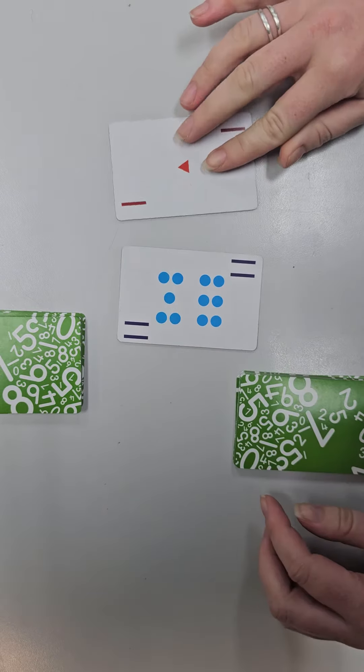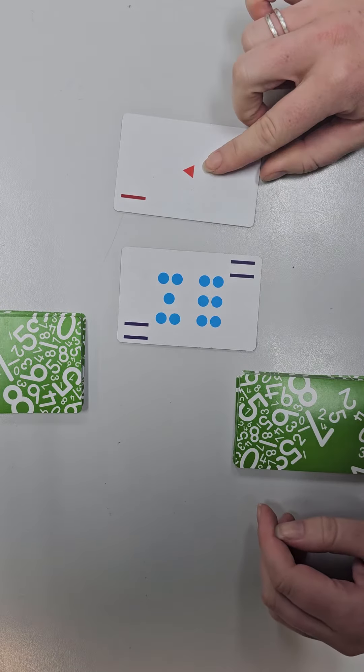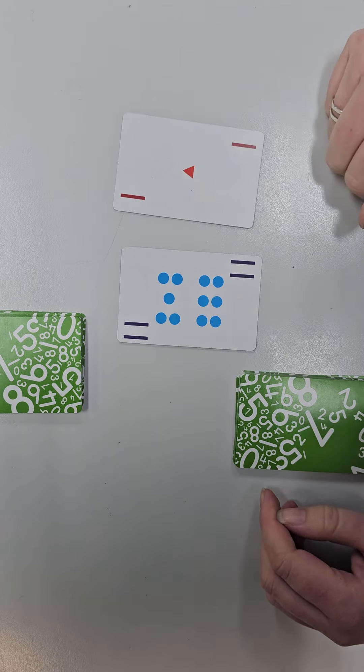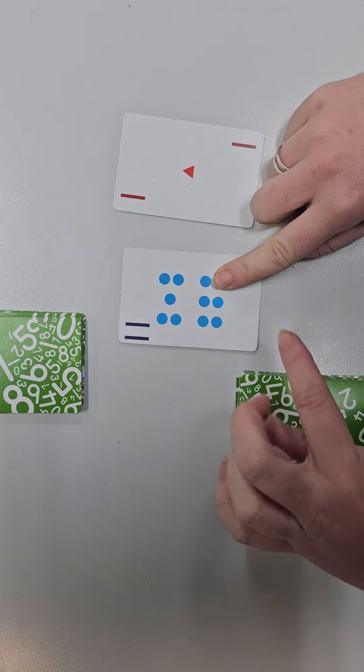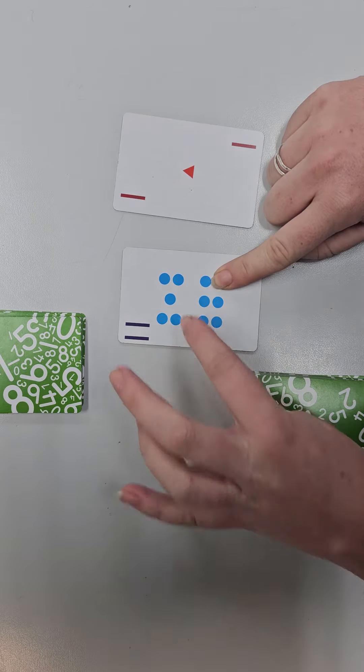So this person's got eleven, take away one, so they could use lots of strategies to solve this. They might just cover up one of the dots and count how many is left.